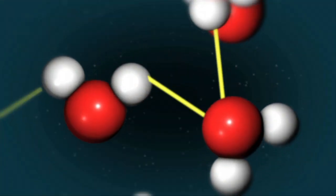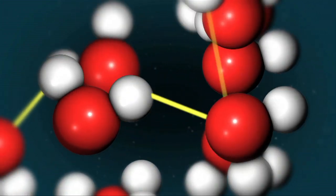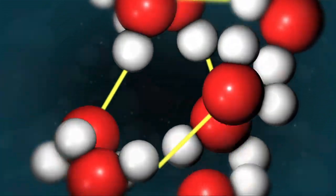Each water molecule is capable of making a maximum of four hydrogen bonds. These bonds are weak and are continuously forming and breaking. As the temperature rises, molecules move faster, weakening hydrogen bonds. At room temperature, water molecules are making between three and four hydrogen bonds.